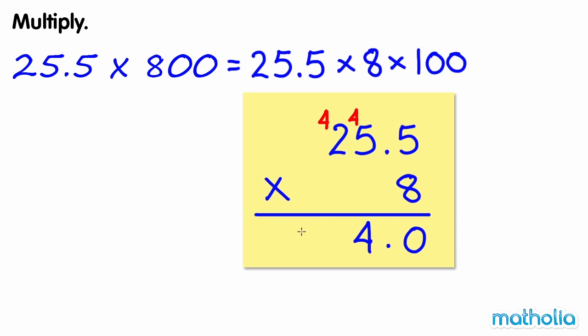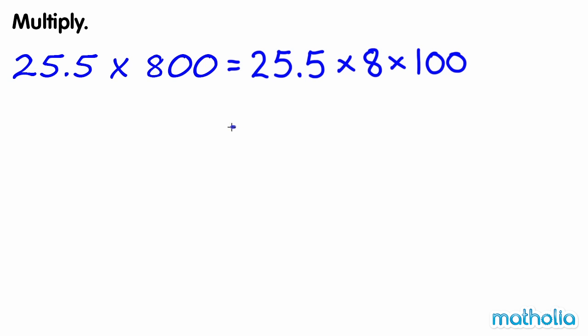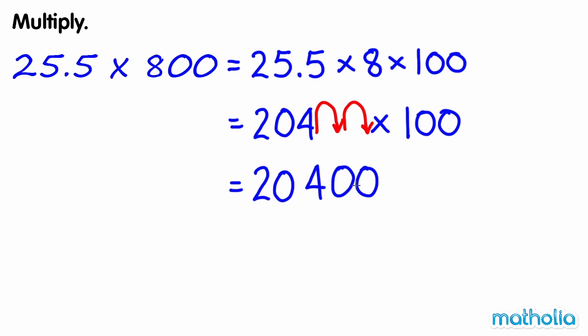25.5 times 8 equals 204. Multiply this by 100 by shifting the decimal point two places to the right. So 25.5 times 800 equals 20,400.